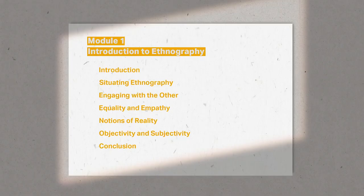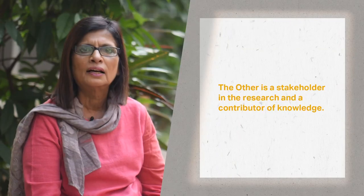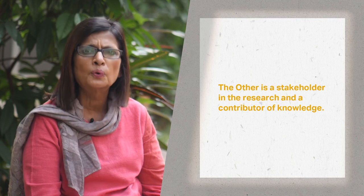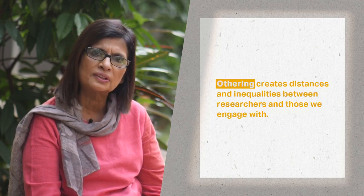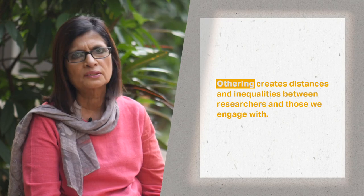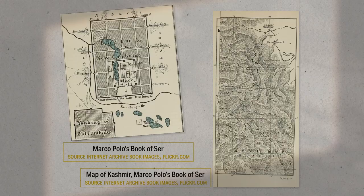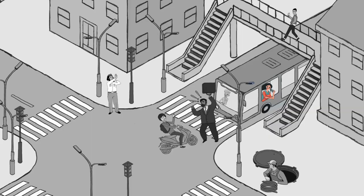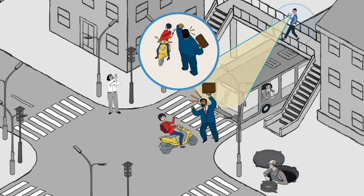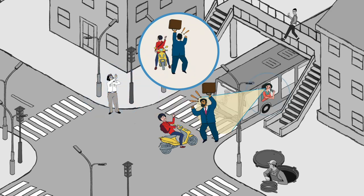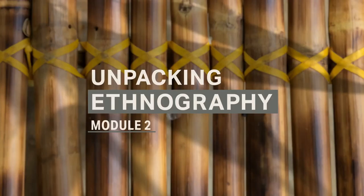Module one is an introduction to ethnographic research and some of its most basic ideas. We discuss and define who is the other and what it means to engage with them in mutually productive ways. We talk about the ways in which ethnography has evolved over the years and how our understanding of the other has developed. We look at some tricky questions such as what is reality and whose reality is more real. Finally, we discuss concepts such as empathy which are crucial to understanding.